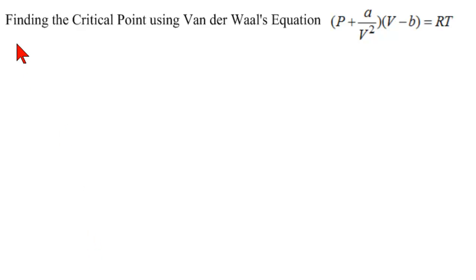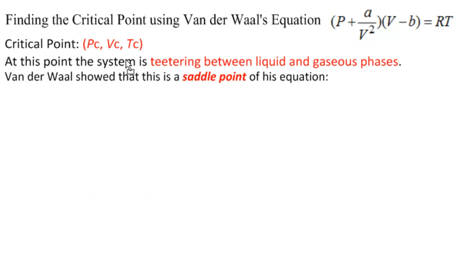In this video, we're going to find the critical point using Van der Waal's equation. Recall that the critical point is PC, VC, TC — critical pressure, critical volume, critical temperature. At this point, the system is teetering between liquid and gaseous phases.